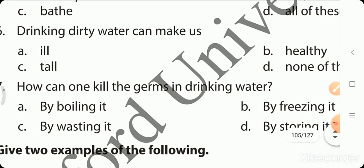How can one kill germs in drinking water? Okay, drinking water, how can you kill germs? By boiling it, by freezing it, by wasting it, by storing it. So to kill germs, boil, freeze, waste, or store? Yes, yes, you are correct. By boiling it.